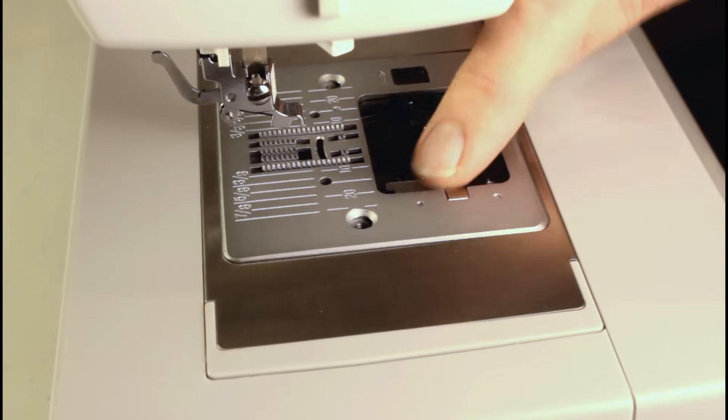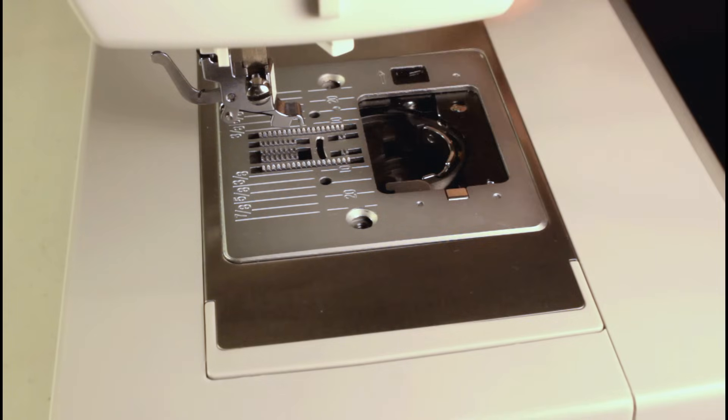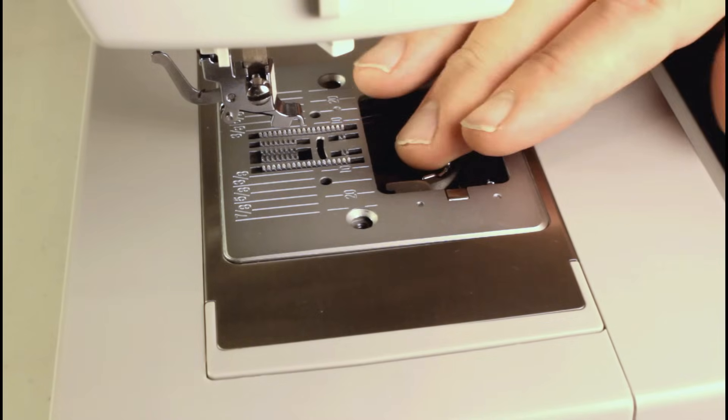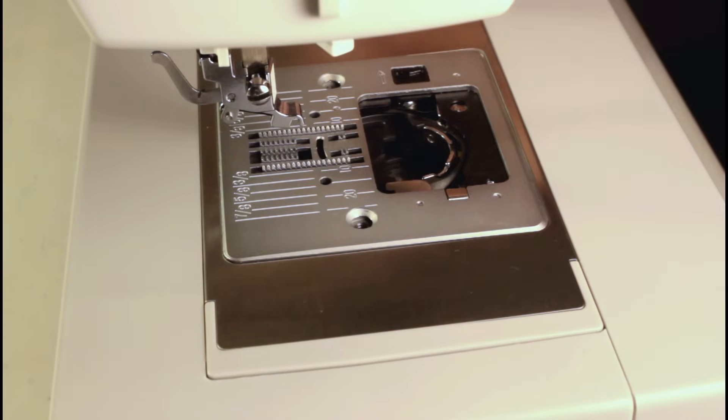And then we need to put our plate back on. It should drop in there. If it doesn't drop in nice and flat, it means your bobbin case is not in correctly. Take it off and undo the screws again and make sure that gets in there nice and flat. And that you can rock it back and forth a little bit smoothly.